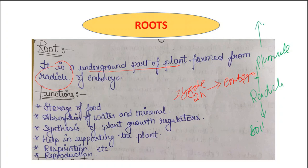So, what is root? It is the part of a plant which is developed from the radicle — specifically the radicle of the embryo. There are certain functions of the root: it helps in storage of food, absorption of water and minerals, and different growth regulators are secreted and formed in the root.